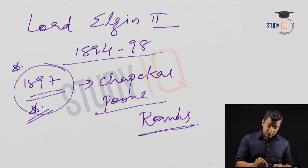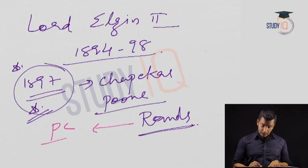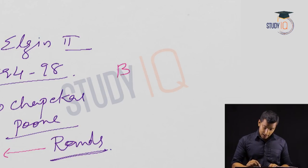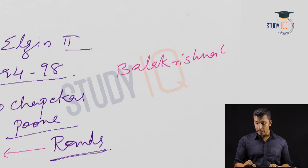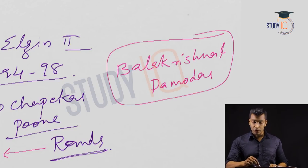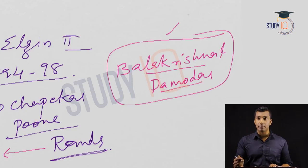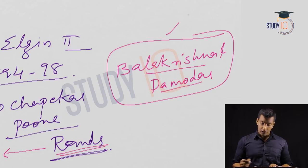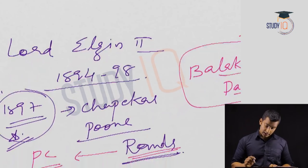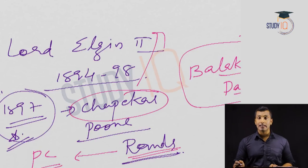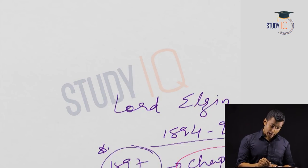Rance was a plague commissioner, killed by the Chapekar Brothers. The brothers' names were Balakrishna and Damodhar. This can be given in names in exam questions — not necessarily as 'Chapekar Brothers.' Chapekar is actually a particular Brahmin caste in Maharashtra.